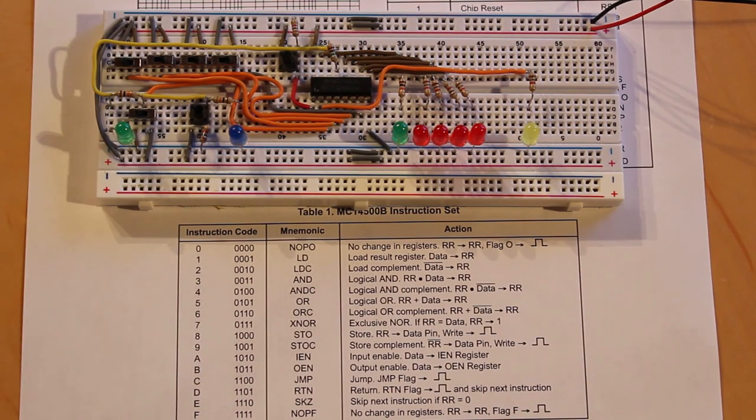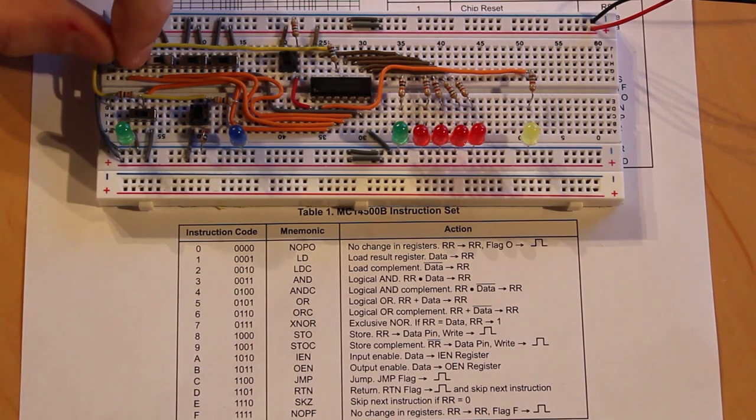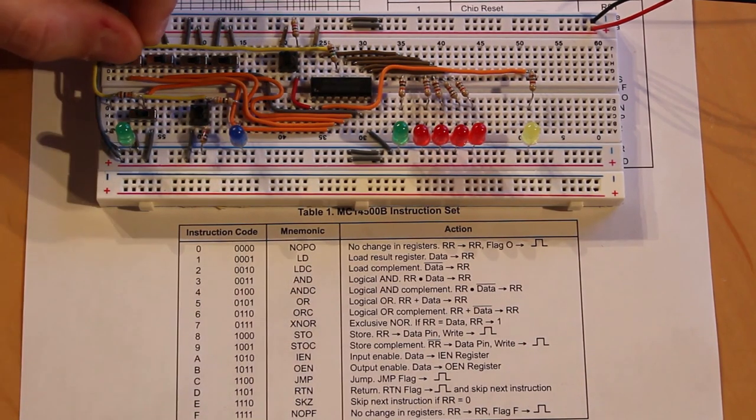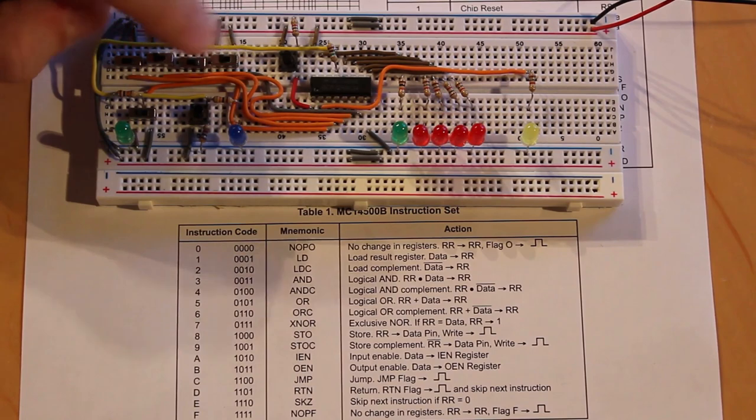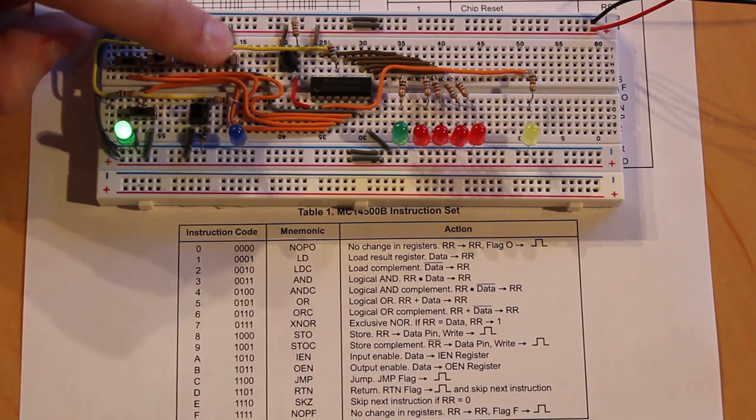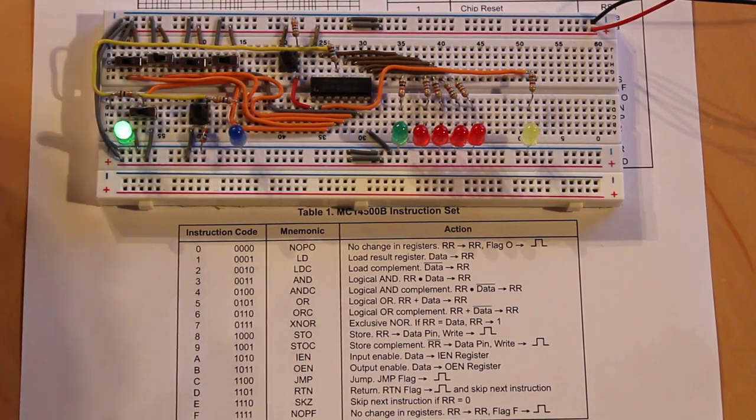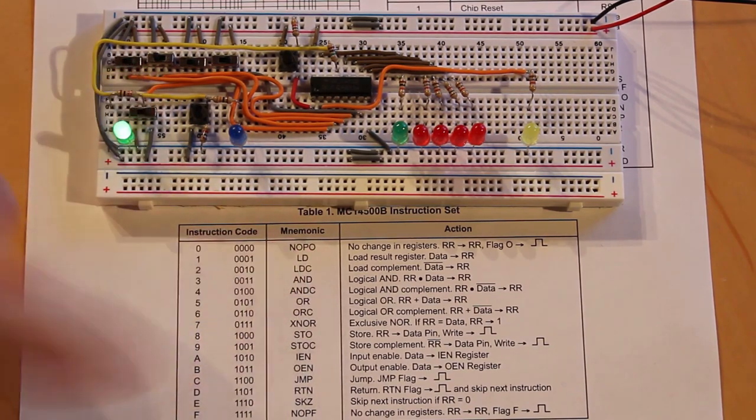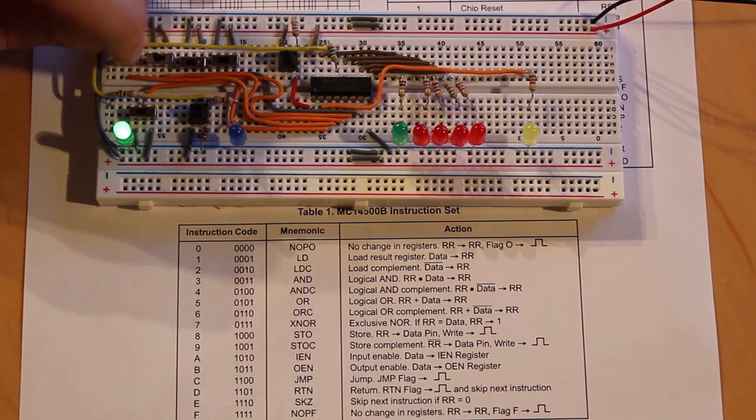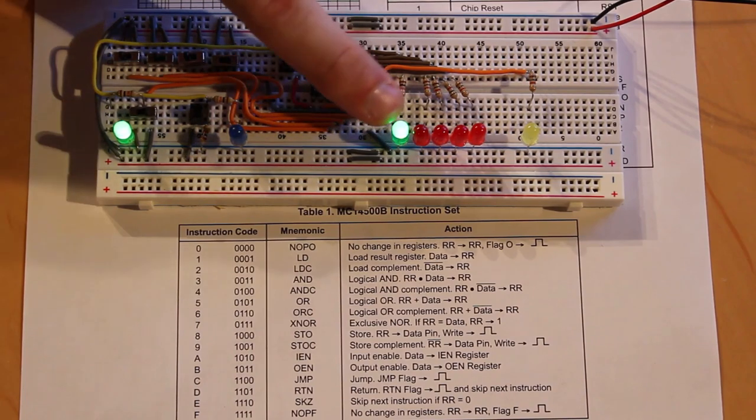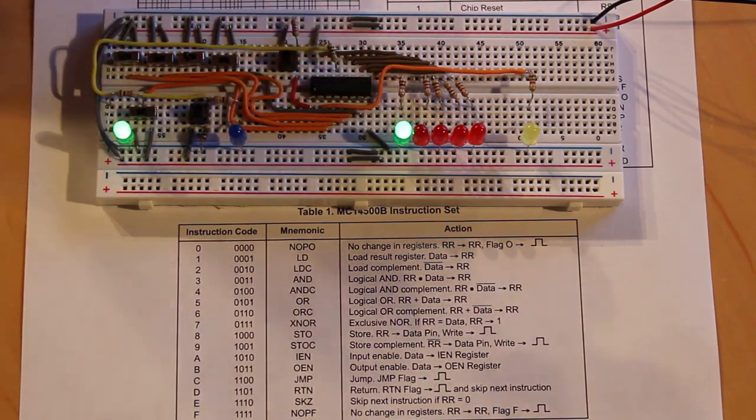And the first thing that we need to do is we need to set the input D flip flop and the output D flip flop to one. And so that's if we look here, that's 1010 and 1011. So 1010. And we need to set our data to one. And then we toggle the clock. And then we go 1011. And then we toggle the clock. And then to make sure that it's working, let's just go ahead and load our data, which is going to be one into the result register, which is 0001. So put you guys at zero, that's one. And so let's toggle the clock. Yep, there we go. You can see that we have a one in our result register here. That's awesome. And so if we turn our data off, and we can do a lot of interesting things with it.